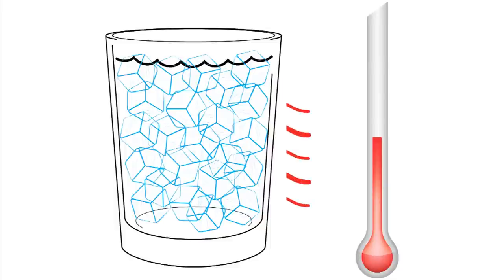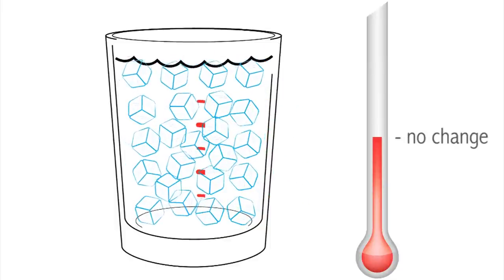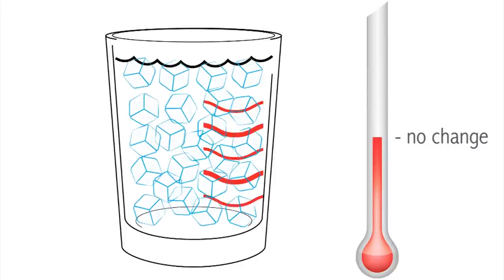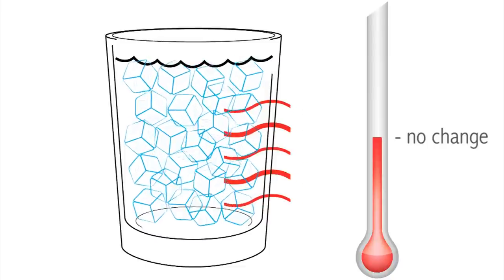32 degrees Fahrenheit or zero degrees Celsius is called the ice point because it is the point at which ice melts into water and water freezes into ice. At the ice point, changes in energy are converted into changes in the phase of water rather than into an increase of temperature.